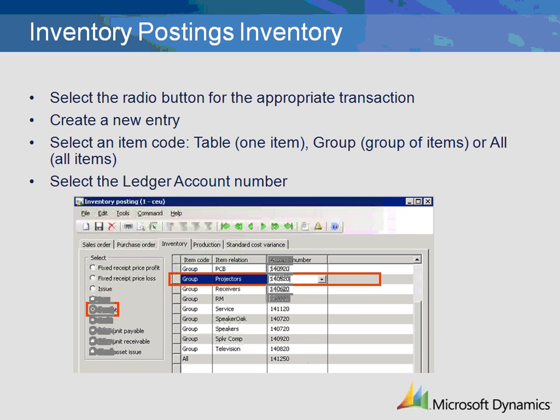The use of tables, groups, and all can be used together within each of the transaction categories. This means that you can have some setup by issue at the table level, some for group, and the remainder for all — allowing you to use a setup by exception concept. Microsoft Dynamics AX will search at the lowest level, starting at the item, then group, then all for the Ledger mapping until it finds the correct level for the item that is impacted.